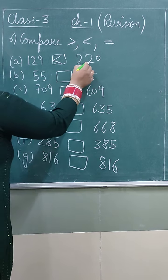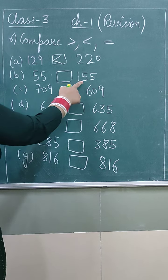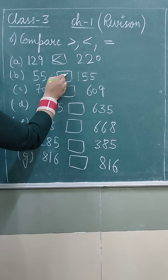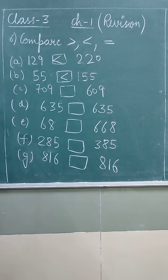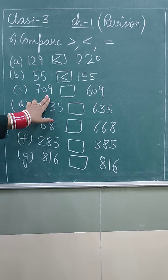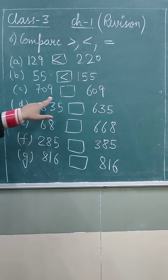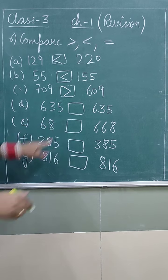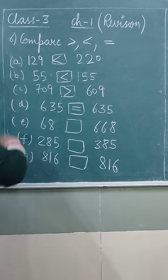Here we have 55, here we have 155. 55 is less than 155. 709, or 609. 709 is greater than 609. 635 equals to 635.